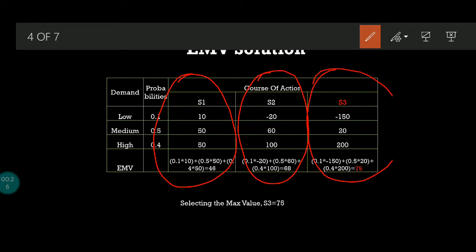Expected monetary value is a simple process. You do it column-wise for S1, S2, and S3. For S1: 0.1 times 10 plus 0.5 times 50 plus 0.4 times 50. For S2: 0.1 times minus 20 plus 0.5 times 60 plus 0.4 times 100, you get 68.